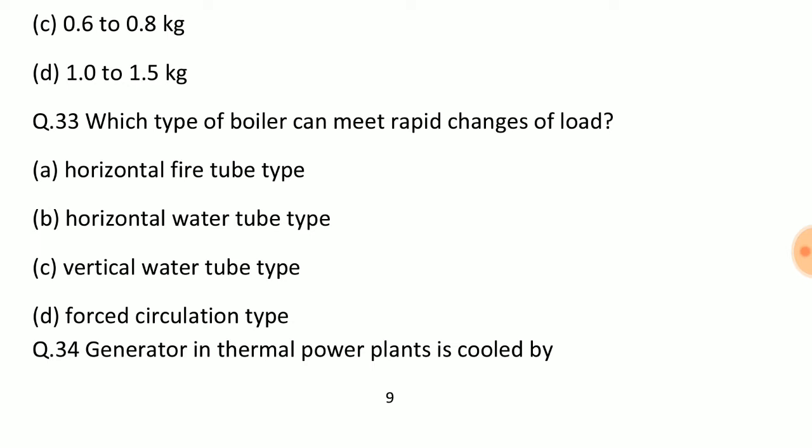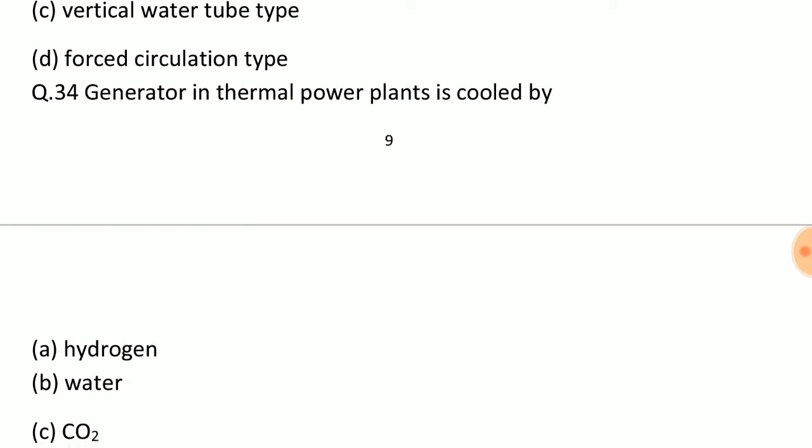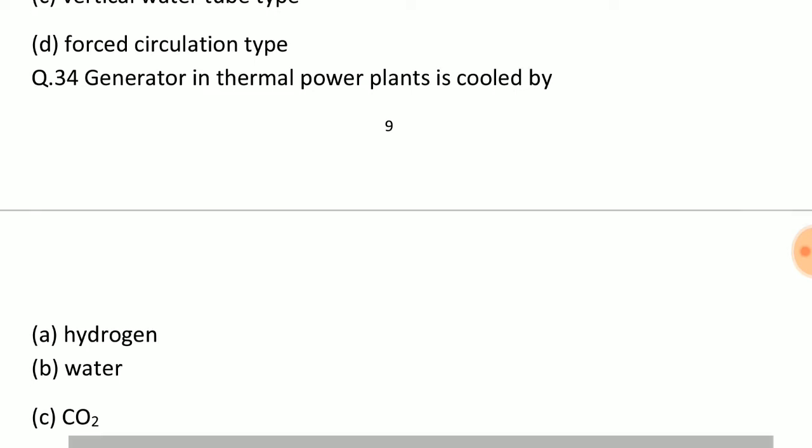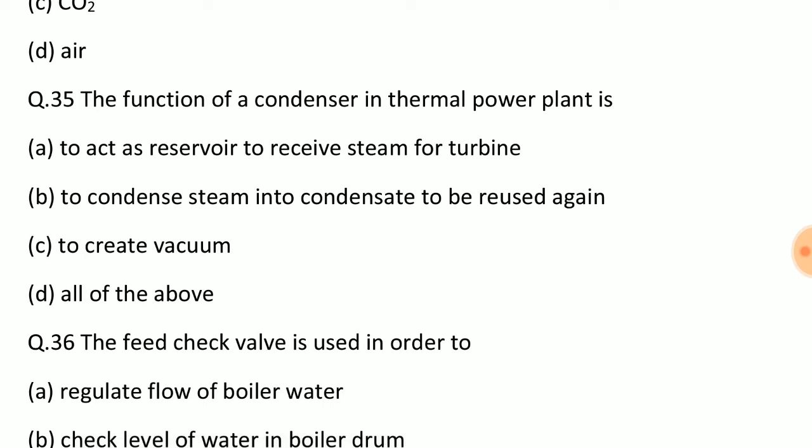Question: Which type of boiler can meet rapid changes of load? Answer: Option D, forced circulation type. Question: Generator in thermal power plants is cooled by? Answer: Option A, hydrogen. Question: The function of a condenser in thermal power plant is to act as reservoir to receive steam from turbine, to condense steam into condensate to be reused again, and to create vacuum. Answer: Option D, all of the above.